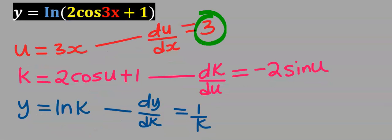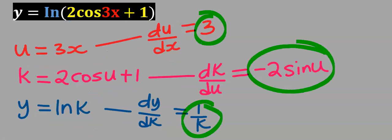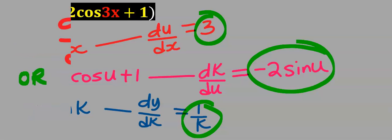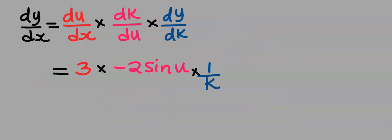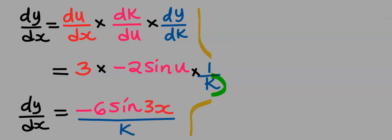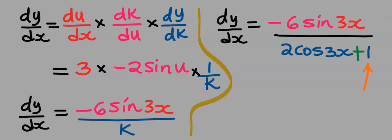Next we're going to multiply the 3 results according to the chain rule formula with double inner functions. After multiplying the 3 functions and replacing the values of u and k, because of the presence of this plus 1, these two cannot cancel, and this becomes our dy/dx.